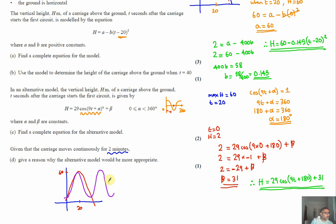What's different about that is the fact that the cosine graph can carry on, it's continuous, so where the quadratic model...